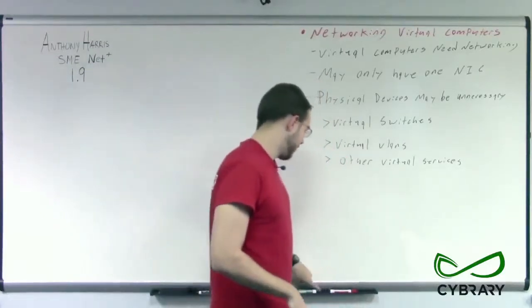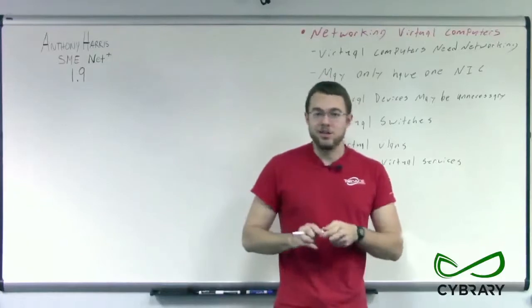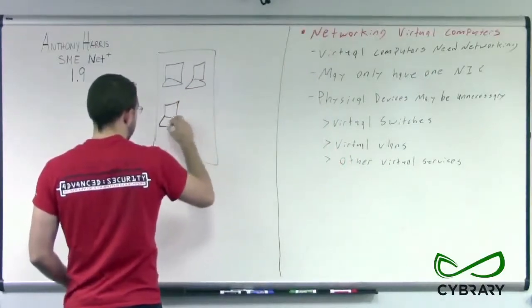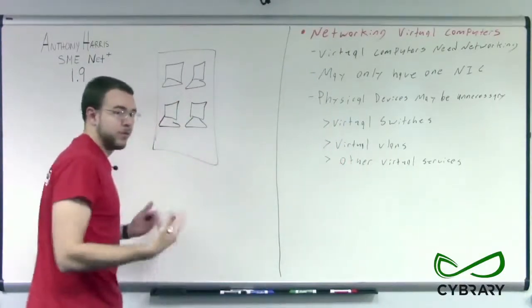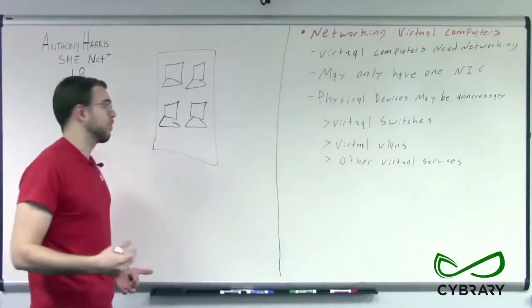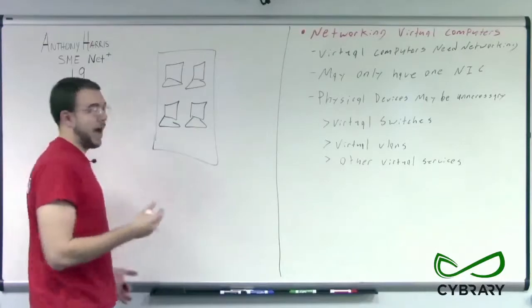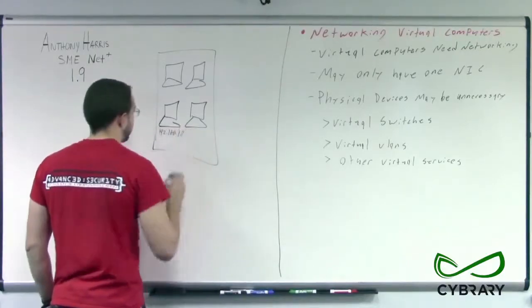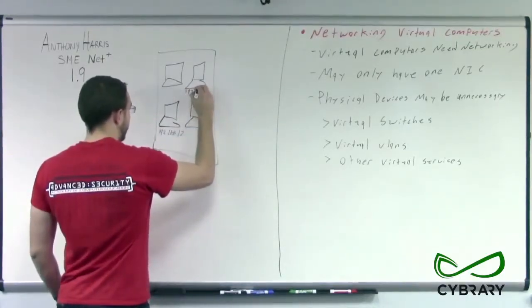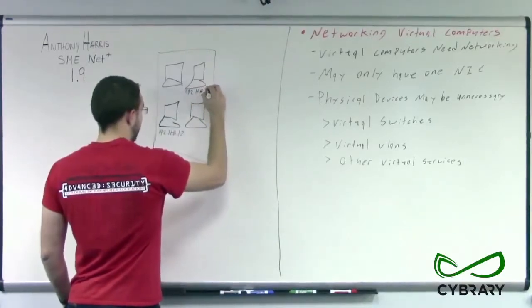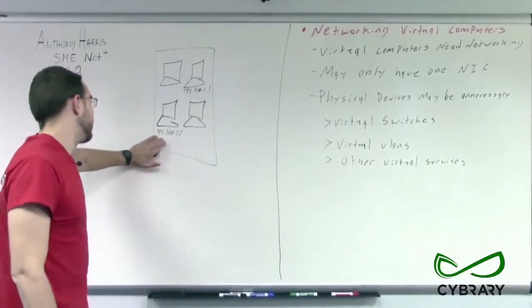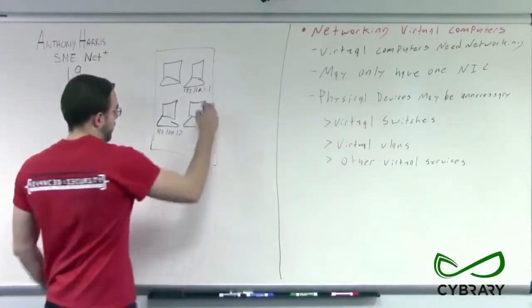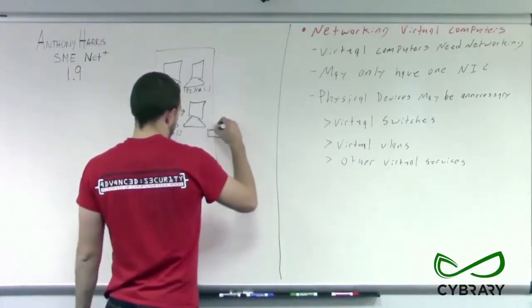These virtual network devices allow us to do things such as set up VLANs between our different virtual servers. So rather than having a physical server with multiple virtual devices inside of it—we'll say four virtual servers inside of our single server—rather than them all having to be on the same IP subnet or having to have the same IP address, we could have different virtual devices on different IP address ranges. For example, 192.168.1.2, 192.168.2.1, and this physical server only has one network interface card.